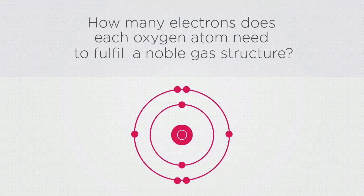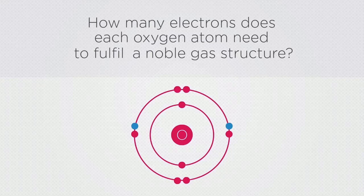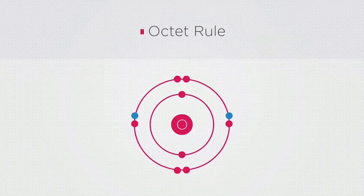The answer is that each oxygen atom needs two more electrons before fulfilling a noble gas structure. This is also called the octet rule.